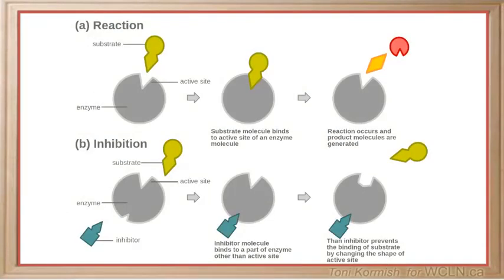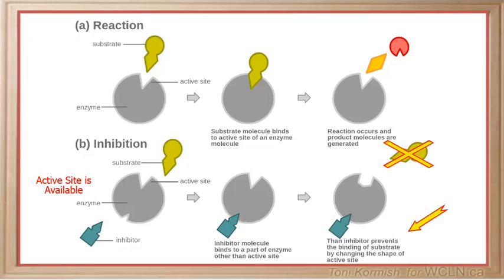A non-competitive inhibitor is a substance that interacts with the enzyme, but usually not at the active site. The net effect of a non-competitive inhibitor is to change the shape of the enzyme and thus the active site, so that the substrate can no longer interact with the enzyme to give a reaction. Examples of non-competitive inhibitors are lead or mercury.